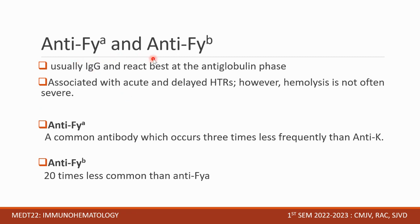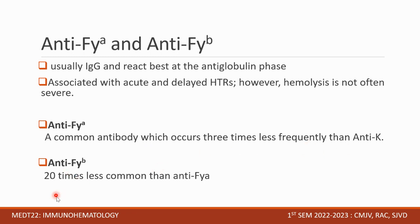Anti-FYA and anti-FYB are usually IgG and react best at the antiglobulin phase. They are associated with acute and delayed hemolytic transfusion reactions, though hemolysis is not often severe. Anti-FYA is a common antibody which occurs 3 times less frequently than anti-K. Anti-FYB is 20 times less common than anti-FYA.